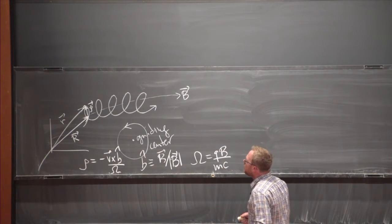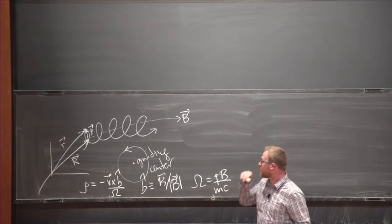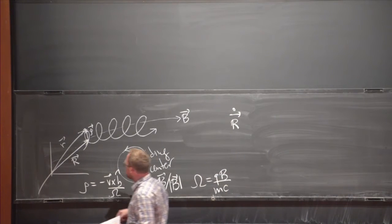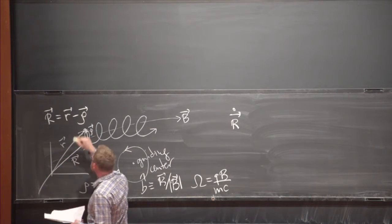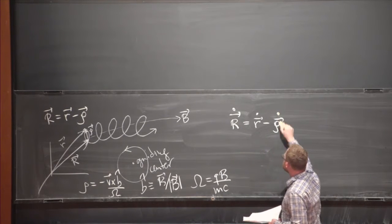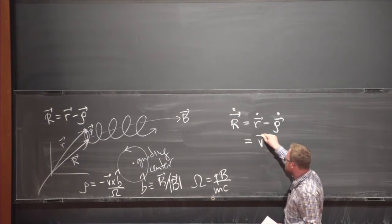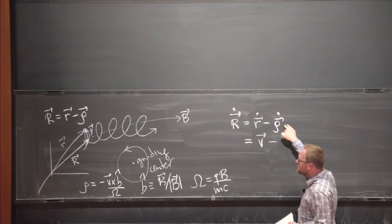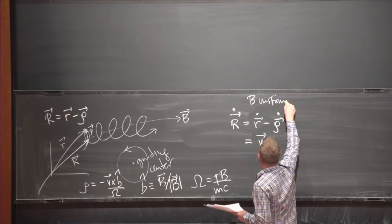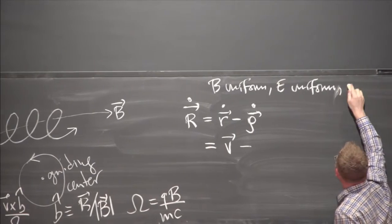The Larmor radius vector is just −V×B̂ divided by the gyrofrequency ω, where ω = QB/Mc in CGS units and B̂ is the unit vector along B. The evolution of the guiding center: since R = r − ρ, we can take the time derivative. For now let's consider B uniform, E uniform, and time-independent—a simple situation, but already interesting.